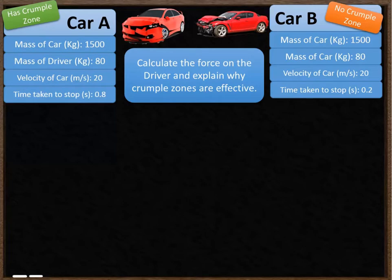We've got two cars, car A and car B. They both have the same mass, 1500 kilograms. They both have the same mass of driver inside, 80 kilograms, travelling at the same speed. So exactly the same vehicle.